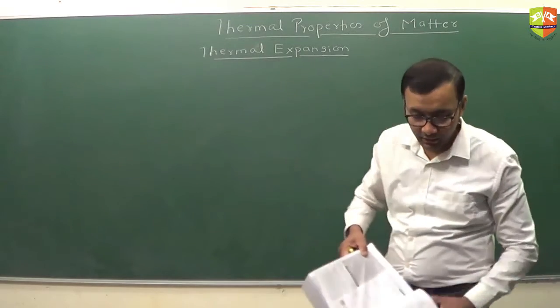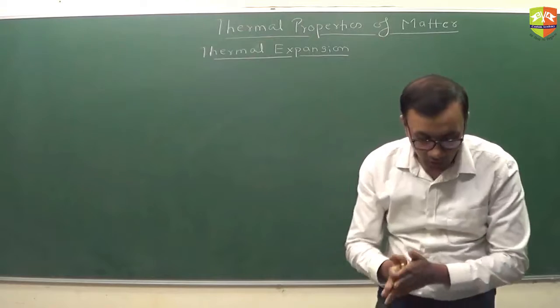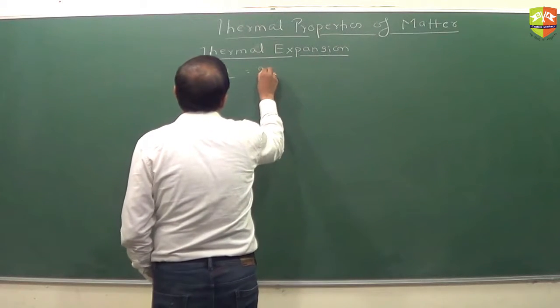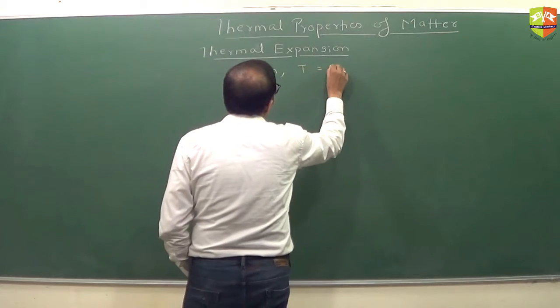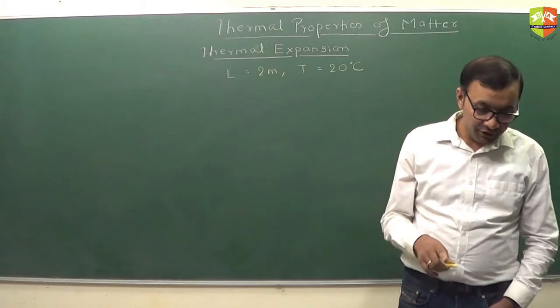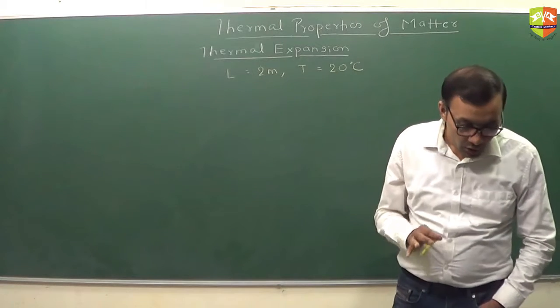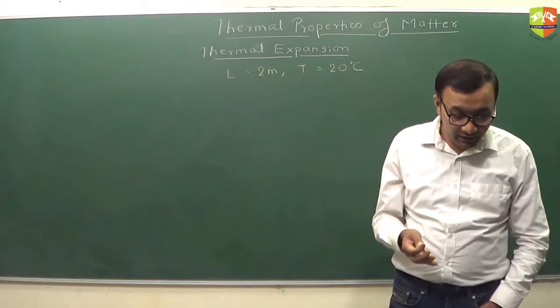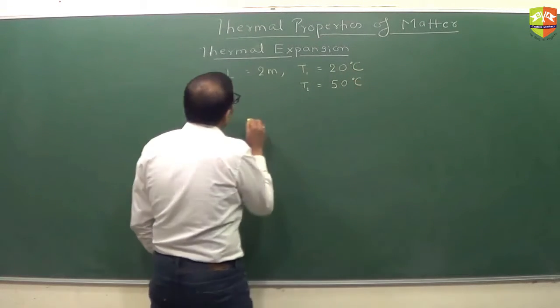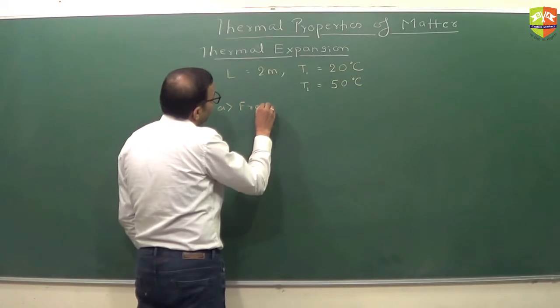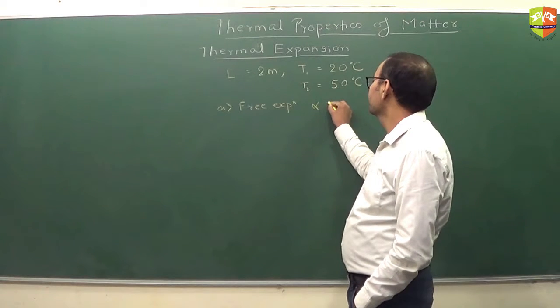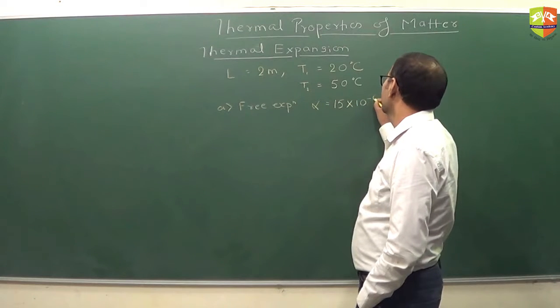Let's do a numerical on stress also. Write down. A rod of length 2 meter is at a temperature of 20 degree Celsius. You need to find out the free expansion of the rod. Free expansion, as in you are not restricting its expansion. Find the free expansion of the rod if the temperature is increased to 50 degree Celsius. So from T1, temperature goes to 50 degree Celsius. You need to find the free expansion. This is the part one. The value of alpha is 15 into 10 to the power minus 6. Can you quickly solve this? Then I will tell you the next one.